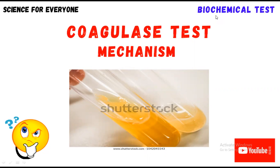Staphylococcus aureus is a special type of microorganism — a gram-positive bacteria — that secretes coagulase enzyme. Most of the coagulase is present on its cell wall. When we have an unknown bacteria and it shows coagulation of the serum, we can say that it is Staphylococcus aureus. Although we will perform different other biochemical tests, this test is very important for identifying whether it is Staphylococcus aureus or not.